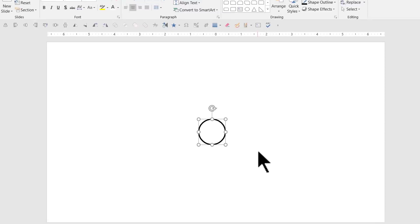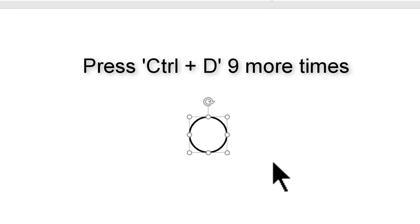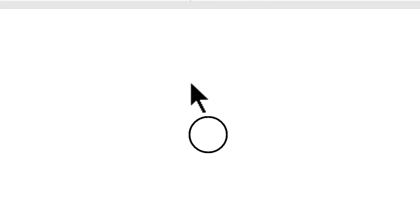So I'm going to press Ctrl-D nine times. Even though this looks like one ring, there are actually 11 rings all arranged one on top of the other.